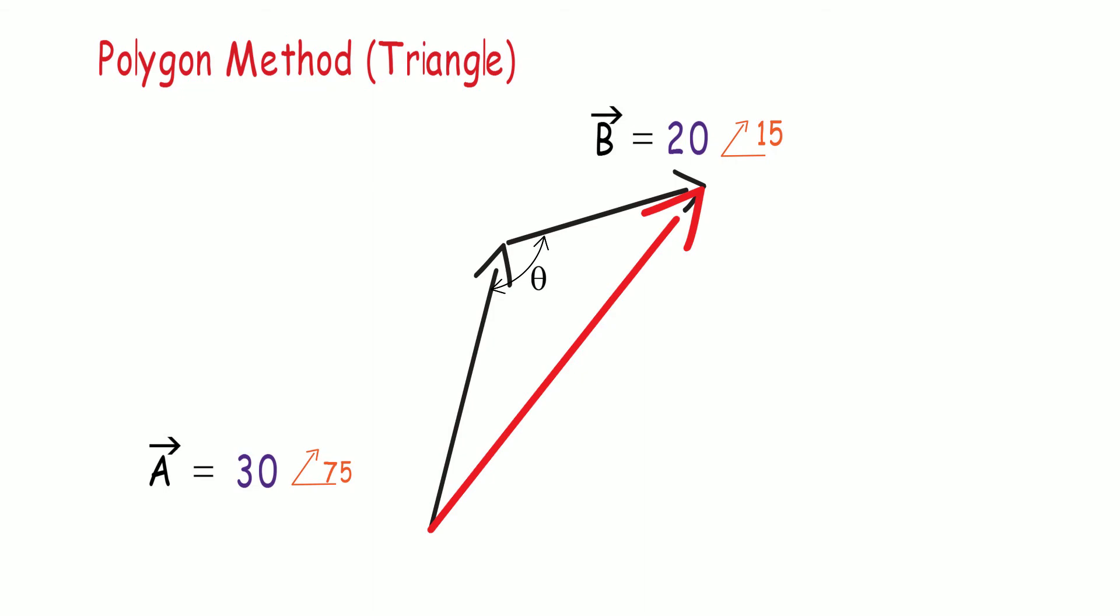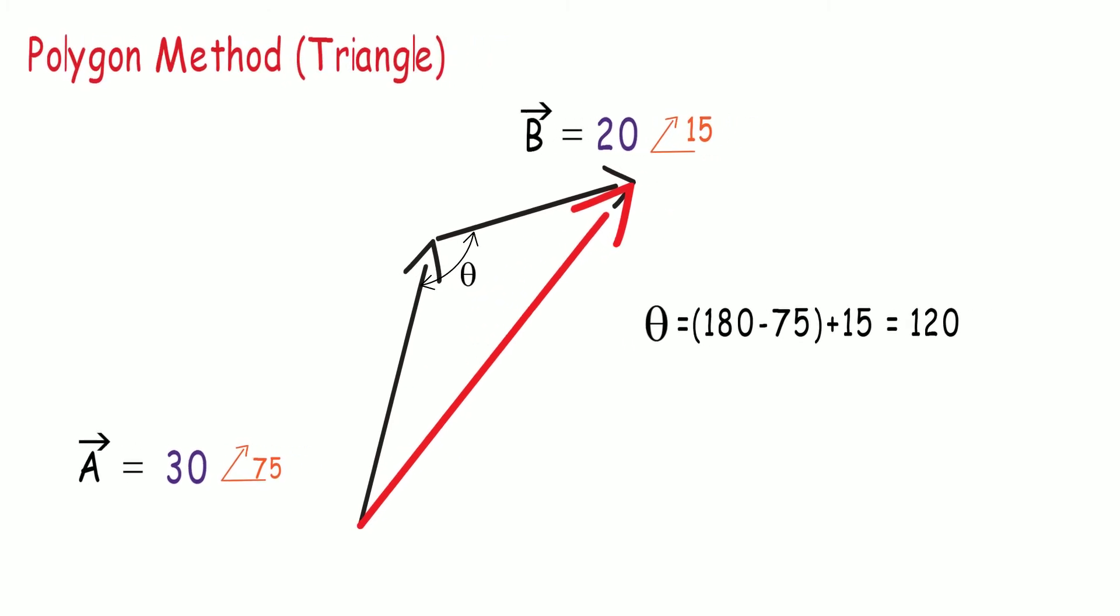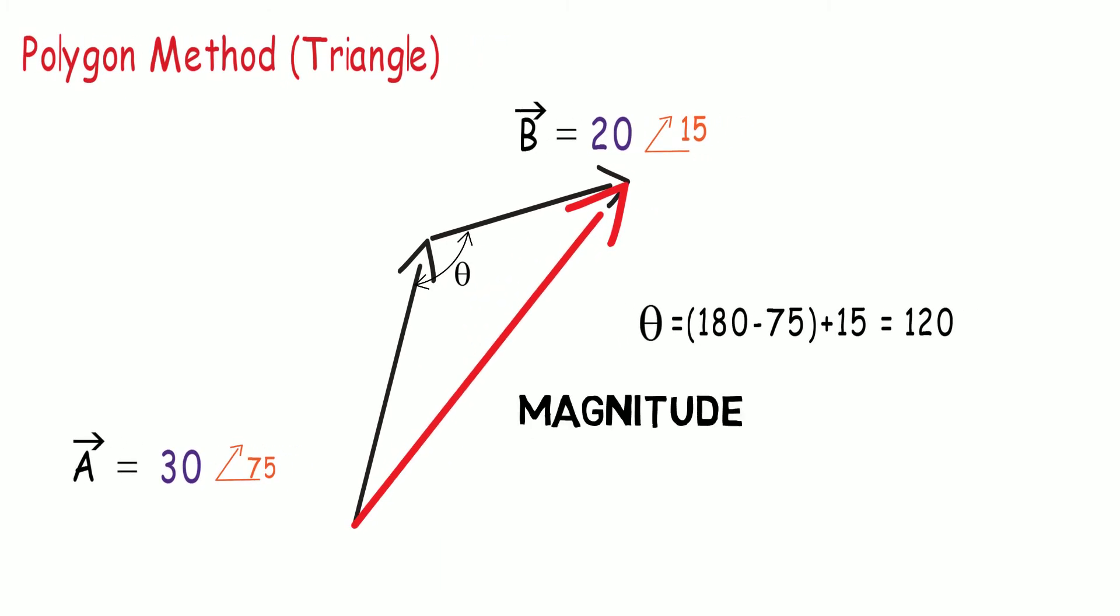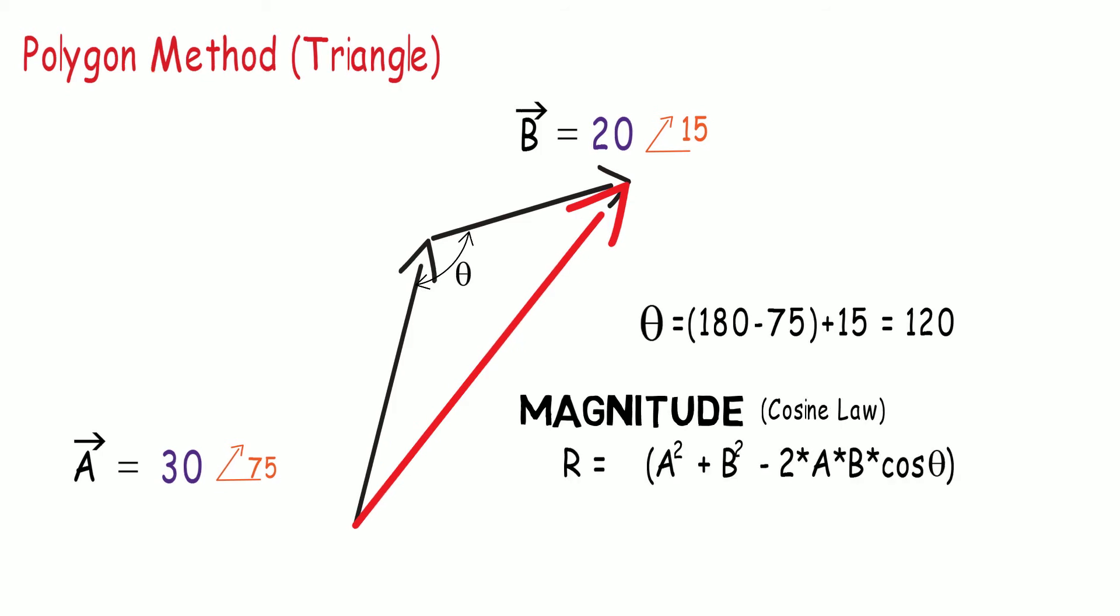Say that the angle made by two vectors A and B is theta, which is equal to 105 added to 15, giving us a total of 120 degrees. The magnitude of the resultant is obtained by the cosine law, where R equals square root of A squared plus B squared minus twice of A times B times cosine of the angle between them, in this case theta, which is 120 degrees. So, substituting the values in this given equation, solving this would give us a resultant of 43.5 units.